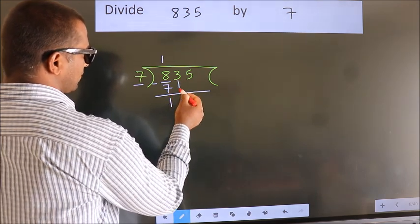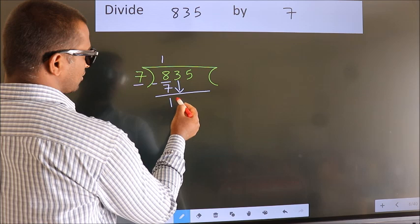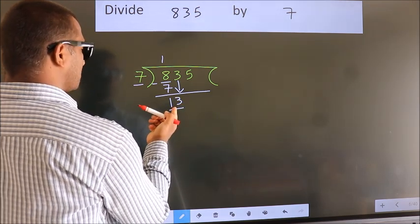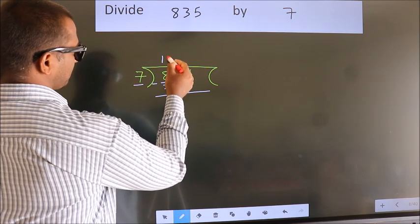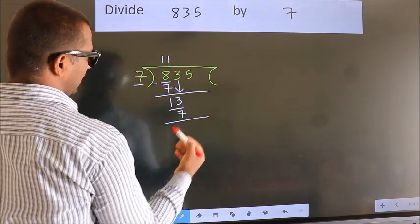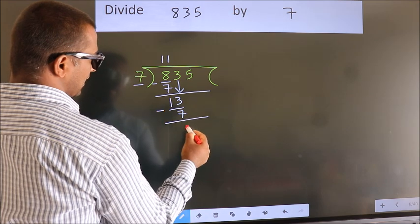After this, bring down the beside number. So, 3 down. So, 13. A number close to 13 in 7 table is 7 times 1 is 7. Now, we subtract. We get 6.